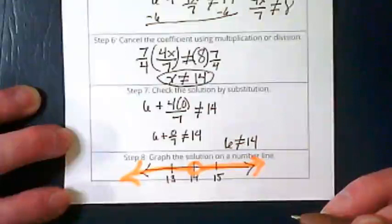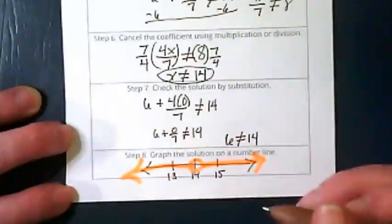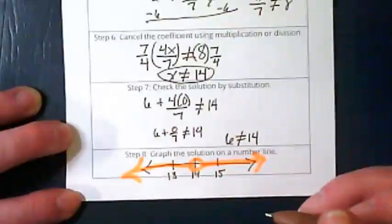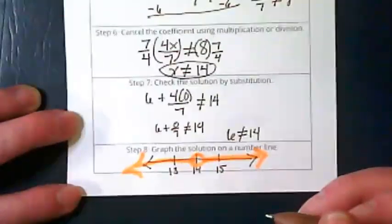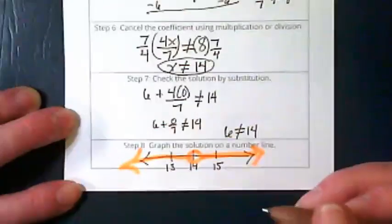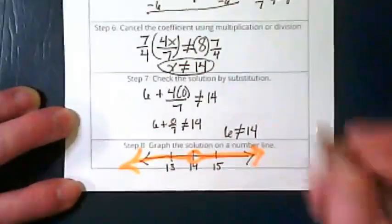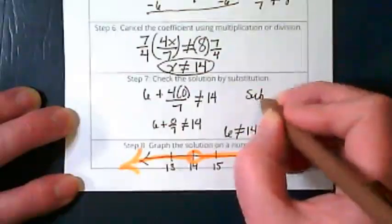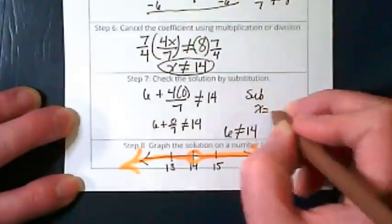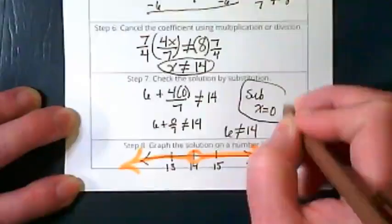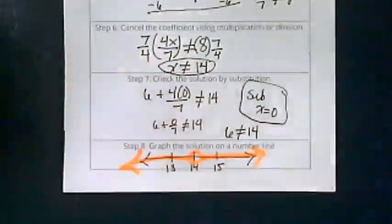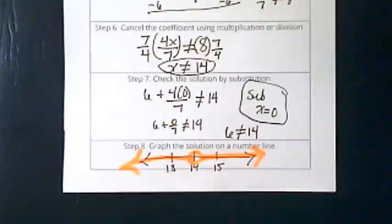So you can choose any number to plug in except 14 to check this. I like 0 because it makes it easy. I basically got rid of that fraction without having to work with it. So I'm going to substitute in here my x equaled 0. You could have used any other number. And I'm guessing when you work with your team you may have.